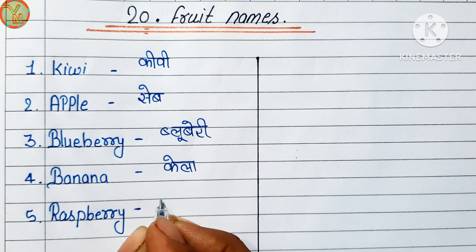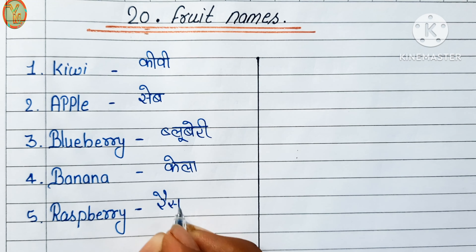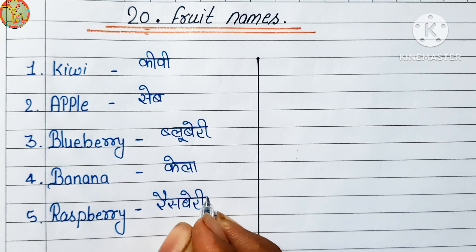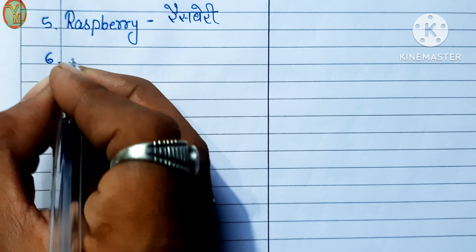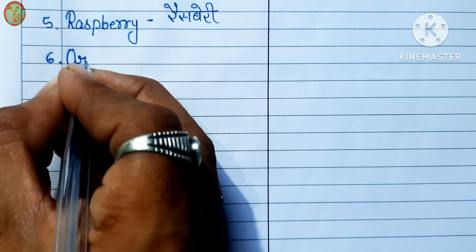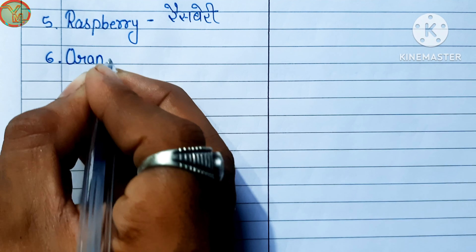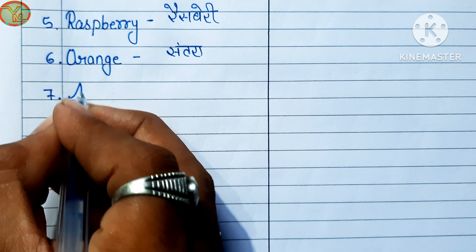Fifth number: raspberry. Raspberry means raspberry. Sixth number: orange. Orange means santra.